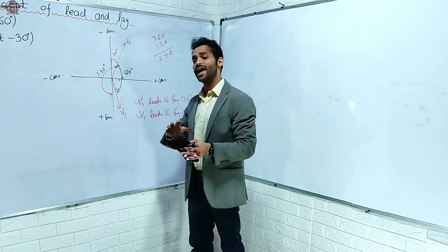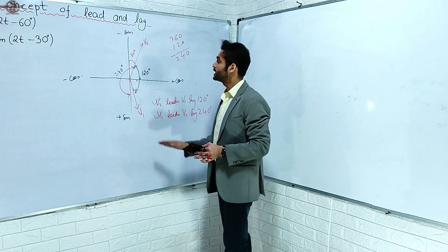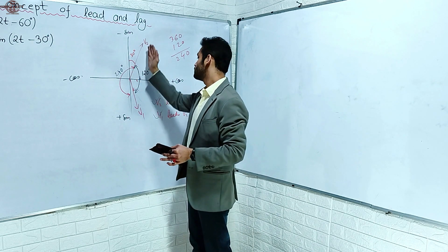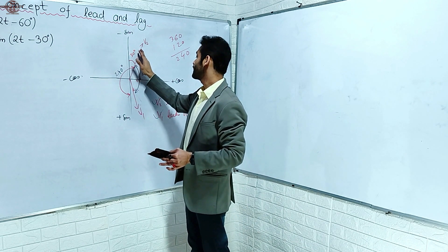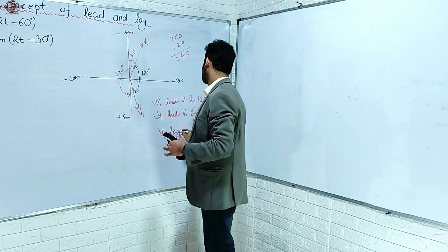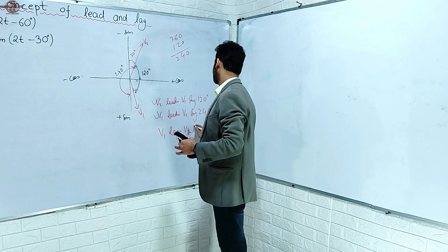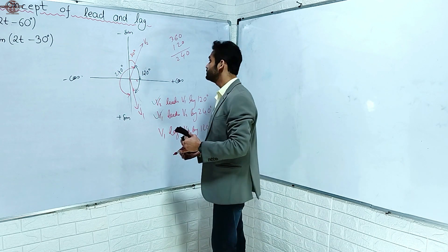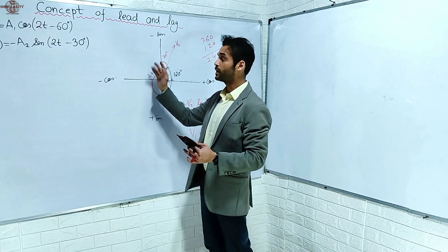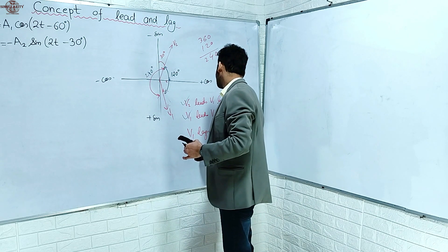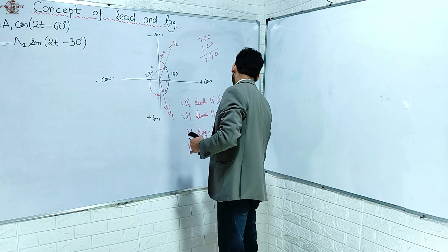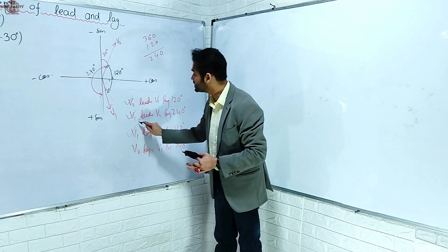In the same sense, if we look at who is lagging, clockwise with respect to V2 is V1 - so we say V1 lags V2 by 120 degrees. Similarly, looking clockwise with respect to V1, V2 is lagging by 240 degrees. So we can also say V2 lags V1 by 240 degrees.